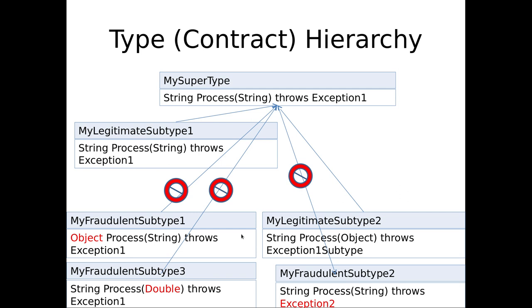So here's an example: I have a supertype whose process method takes a string and returns a string. Subtype 1 has exactly the same signature — that's legitimate, fine, vanilla.